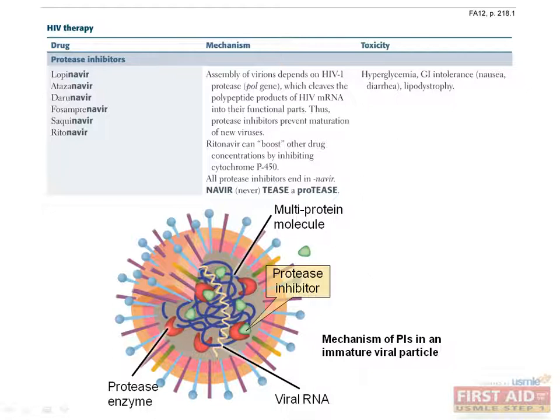The protease inhibitors all have names ending in -navir. These drugs prevent the maturation of new viruses by inhibiting the action of HIV-1 protease, a viral enzyme encoded on the POL gene that cleaves polypeptide products of HIV mRNA into their functional parts — an integral step in the assembly of virions. Protease inhibitors are associated with adverse reactions such as hyperglycemia, nausea, diarrhea, and lipodystrophy.